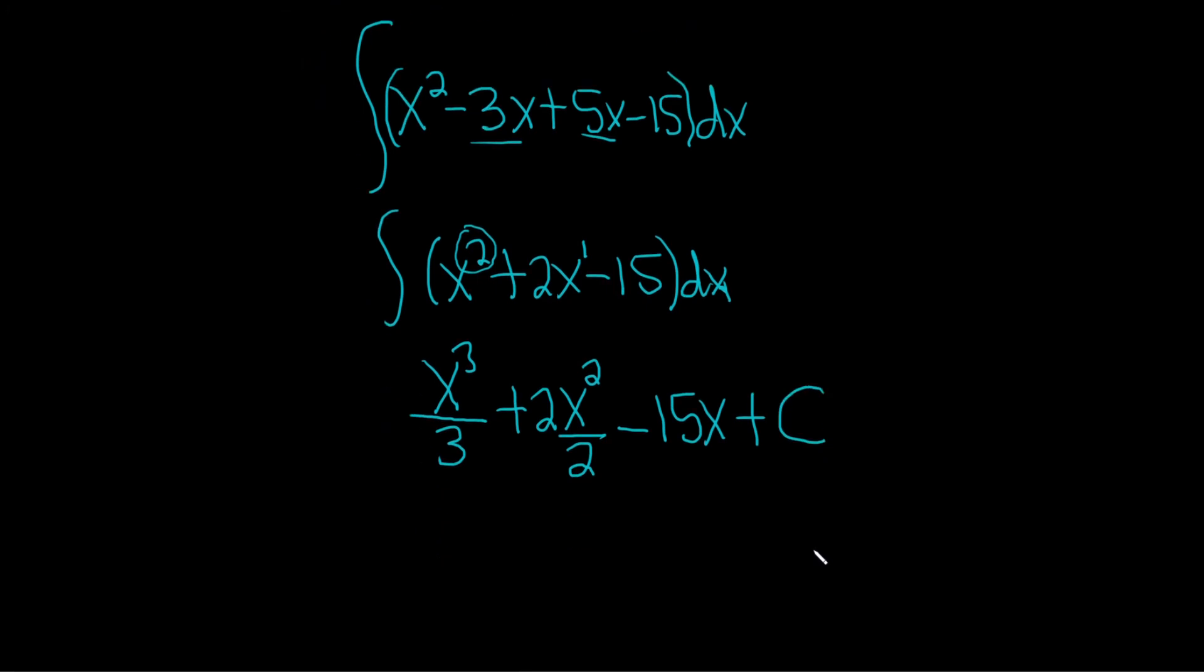So we have (1/3)x³ plus—these cancel—so we have x² minus 15x plus C. And that would be the final answer. I hope this video has been helpful.